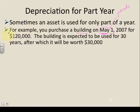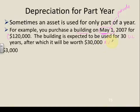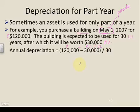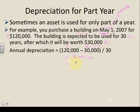The building costs $120,000 — there's our cost. It is expected to be used for 30 years — our useful life — after which it will be worth $30,000, which is our residual value. So our formula gives us: $120,000 minus $30,000 divided by 30 years equals $3,000. That would be our depreciation expense for a full year, but we haven't had this asset for a full year — we got it on May 1st.